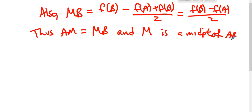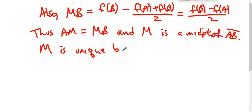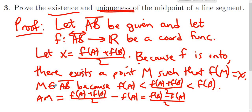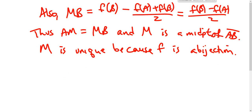Is there more than one midpoint? No — because f is a bijection. When we find point M with this particular coordinate, that coordinate must be the coordinate of the midpoint, and there is only one point that can have that coordinate. So M is unique and we're done.